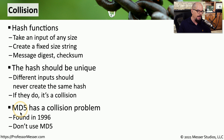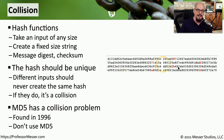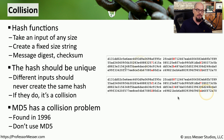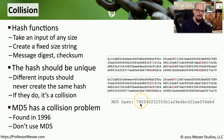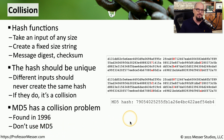There have been cases where a hashing algorithm did create the same hash for different types of input. This occurred with the MD5 algorithm — a collision problem was found in 1996. Here are two inputs that are almost the same, but the characters marked in red show the differences. If we hash the first and second inputs, we should get two different hash values, but with MD5 we got exactly the same hash value. That is a collision, and it's another reason why we usually don't use MD5 to perform a hash.